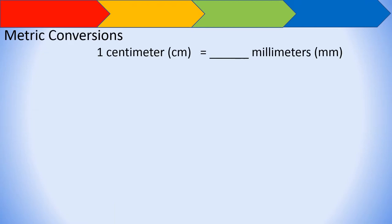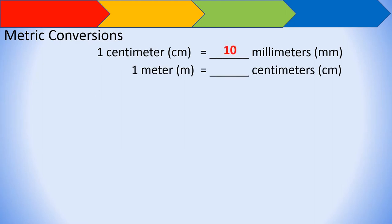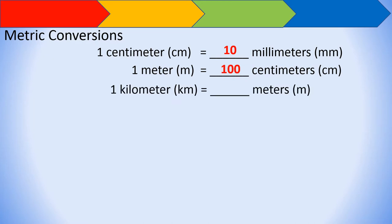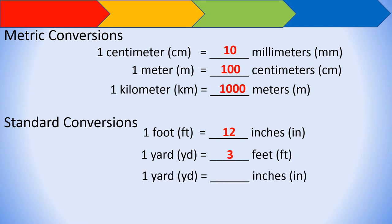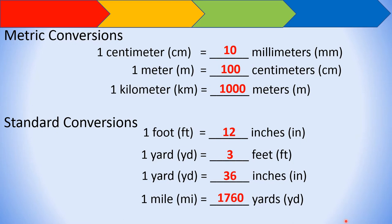And 1 year is equal to 12 months. For metric conversions: 1 centimeter is equal to 10 millimeters, 1 meter is equal to 100 centimeters, and 1 kilometer is equal to 1,000 meters. For standard conversions: 1 foot is equal to 12 inches, 1 yard is equal to 3 feet, 1 yard is equal to 36 inches, and 1 mile is equal to 1,760 yards. These are the common conversions needed in solving problems regarding speed, distance, and time.